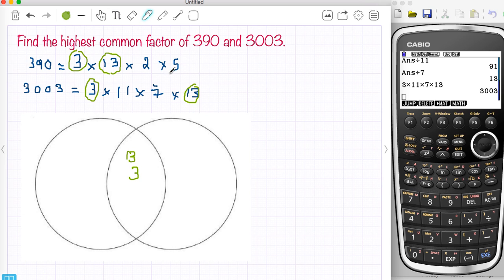Now this one we'll put down just say the 390, so I've got a 2 and a 5. So 390 is made up of all these numbers, 2, 5, 13 and 3. 3003 is made up of 3, 13 and I've got 7 and 11 and they're all prime.